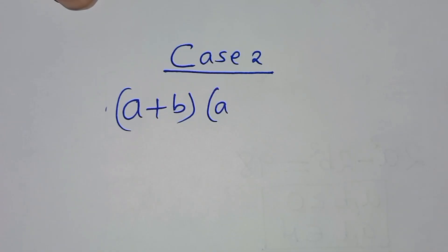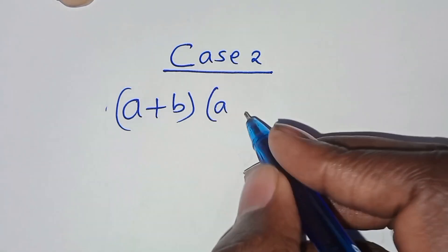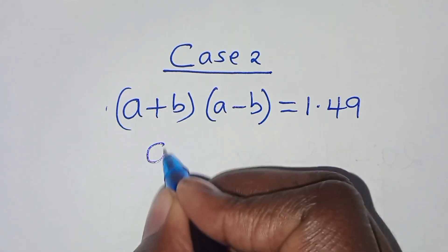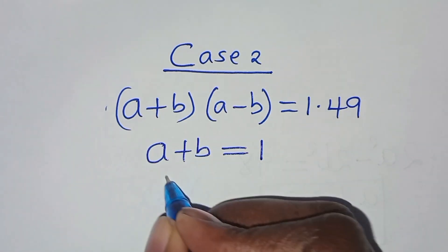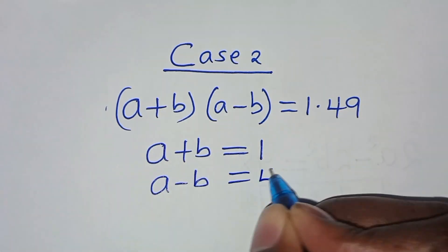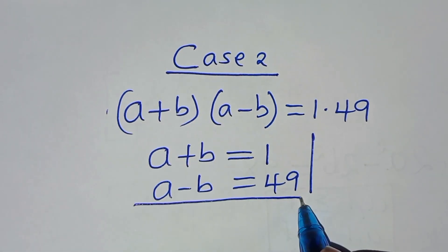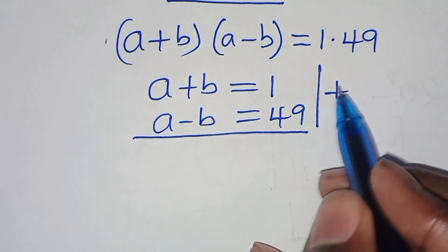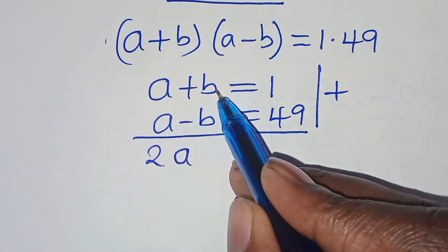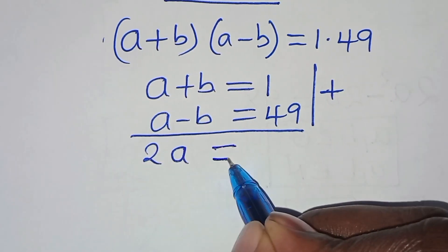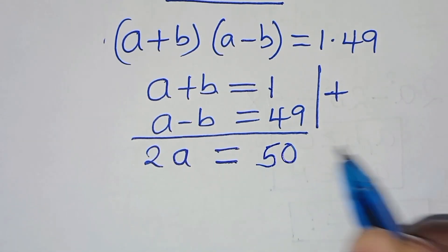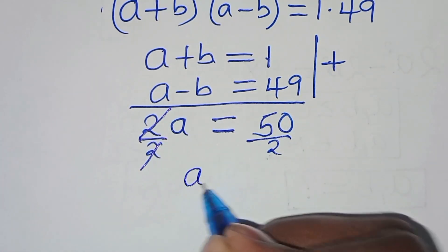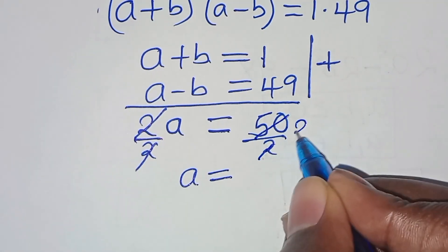Case 2: (a + b)(a − b) = 1 × 49. This implies a + b = 1 and a − b = 49. Adding these two equations: 2a = 1 + 49 = 50, so dividing both sides by 2, a = 25.